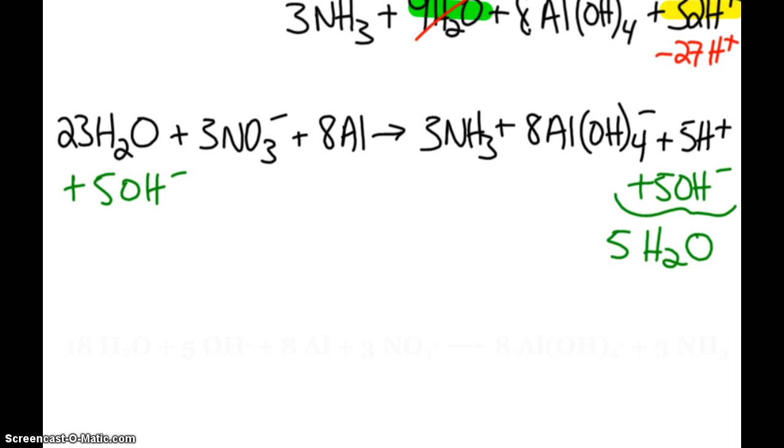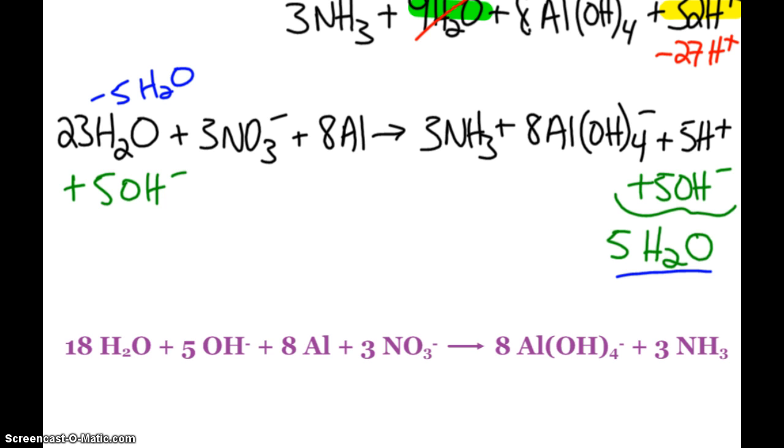So are we done? Boy, we sure would like to be. But I notice again, I've got five waters on my product side. I have water on my reactant side. So I can subtract five waters from the 23 there. So lo and behold, my overall balanced reaction. 18 waters plus the five hydroxides that I put in plus eight aluminums plus three nitrates will make eight of those aluminum hydroxide complex ions and three ammonia. Yay! And now you can sit there and bask in your warm fuzzy feeling of accomplishment for tackling that problem.